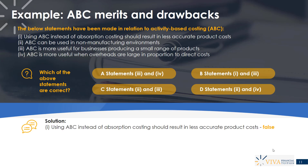Statement one: using ABC instead of absorption costing should result in less accurate product costs. That is definitely false. What we know is ABC is a much more complex process, and in a lot of organizations that deeper dive on overheads — breaking things down into activities, cost drivers, and so on — should absolutely give us much more accurate product costs. It's a much more accurate overhead cost per unit, which feeds into a much more accurate product cost per unit.